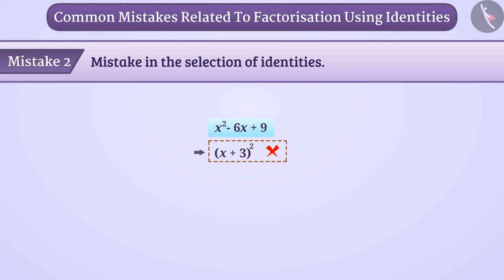This happens because here children see that 9 is a perfect square and the variable x is also a square. So they think that identity 1 is used to factorize the algebraic expression shown. They do not notice here that there is a minus sign between x square and 6x.